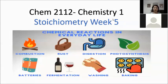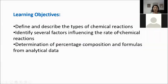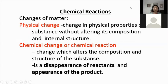Good morning, dear students in Chemistry 1. Welcome to this virtual class. Our topic this morning is Week 5, a continuation of stoichiometry. Our learning objectives are to define and describe the types of chemical reactions, identify several factors influencing the rate of chemical reactions, and determination of percentage composition and formulas from analytical data.